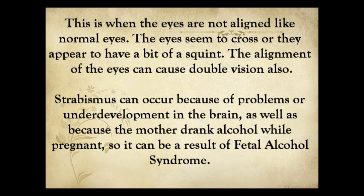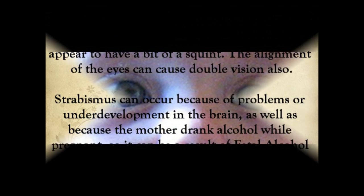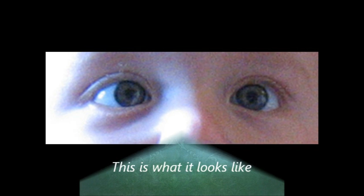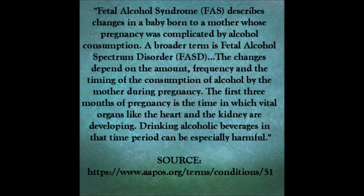Next is strabismus, or simply eye squint or cross-eyed. This is when the eyes appear to squint or they look crossed. This can create double vision, and it can occur if the mother drinks alcohol while she is pregnant, which is also known as fetal alcohol syndrome. Here's some information about fetal alcohol syndrome and the effect that it can have on infants.